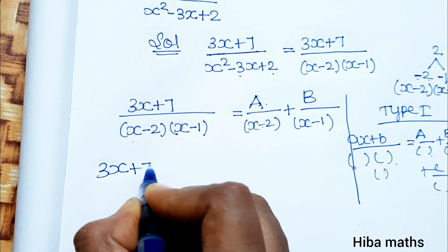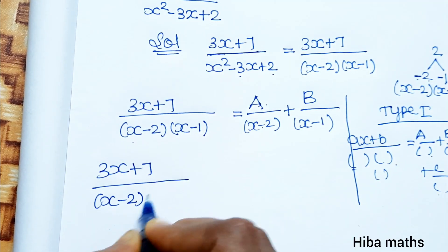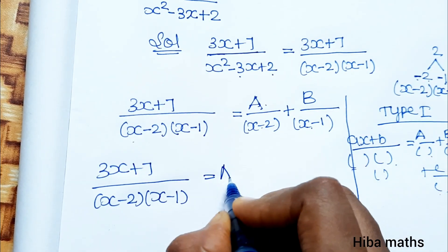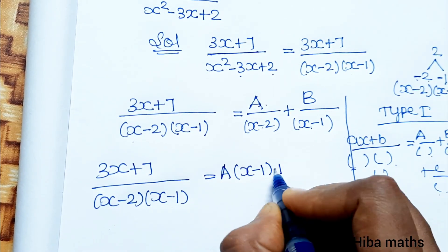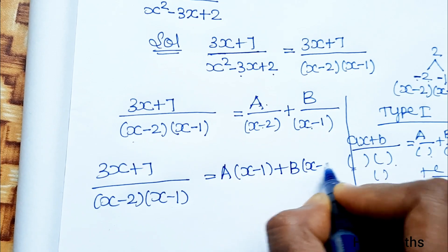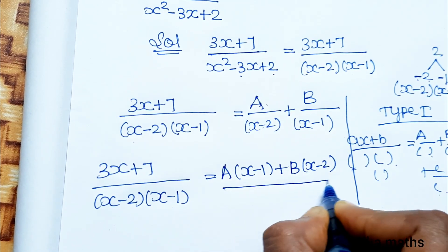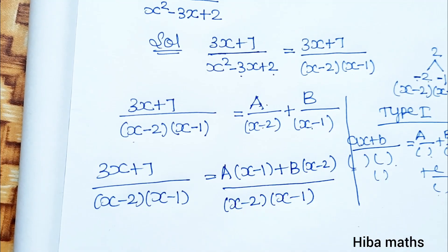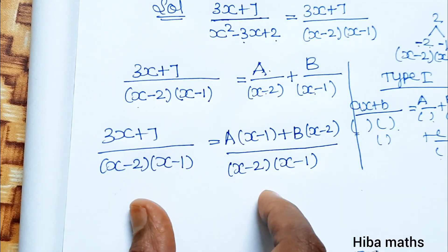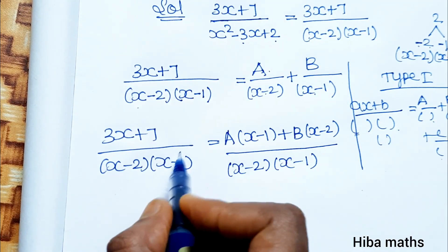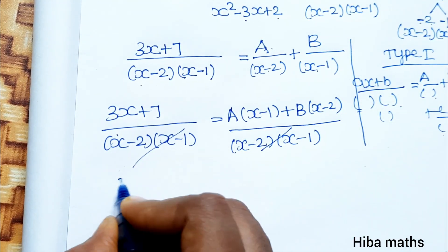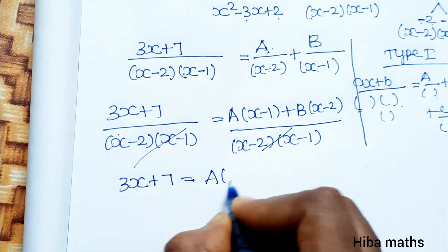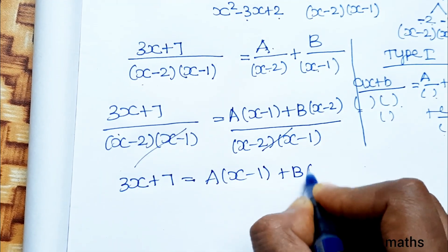So: 3x plus 7 divided by (x minus 2)(x minus 1) equals, after cross multiplying, A(x minus 1) plus B(x minus 2), all divided by (x minus 2)(x minus 1). The second step is to cancel the denominators, giving us the numerator equation.